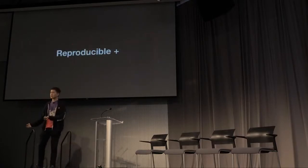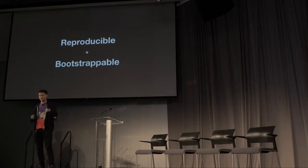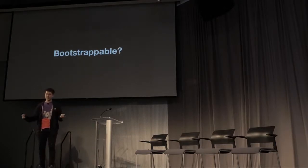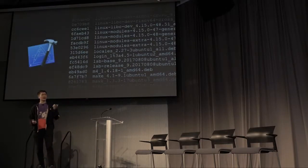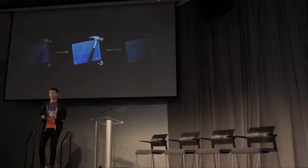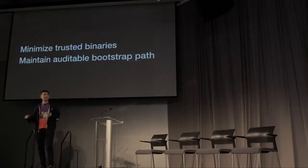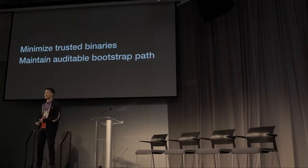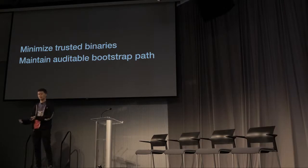We need to be more than reproducible. We need to be bootstrappable. Being bootstrappable means we can't have many opaque binary tools that we trust to be downloaded from a third-party server that can change at any time. It means we need to know how these tools are built and we need to be able to reproduce these tools from a minimal set of trusted binaries. In other words, we need to minimize our trusted set of binaries and maintain an easily auditable bootstrap path from these binaries into the toolchain we use to build Bitcoin. This allows us to minimize trust and maximize verification.